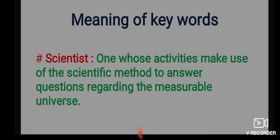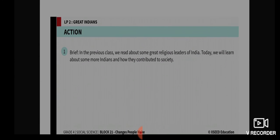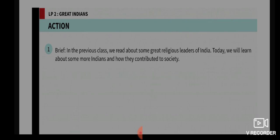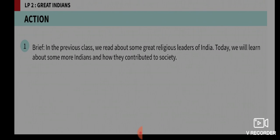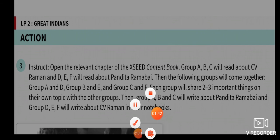According to the definition, a scientist is one whose activities make use of the scientific method to answer questions regarding the measurable universe. In the previous class, we read about some great religious leaders of India, like Gautama Buddha and Mahavira. Today we will learn about some more great Indians and how they contributed to society — besides those great religious leaders.